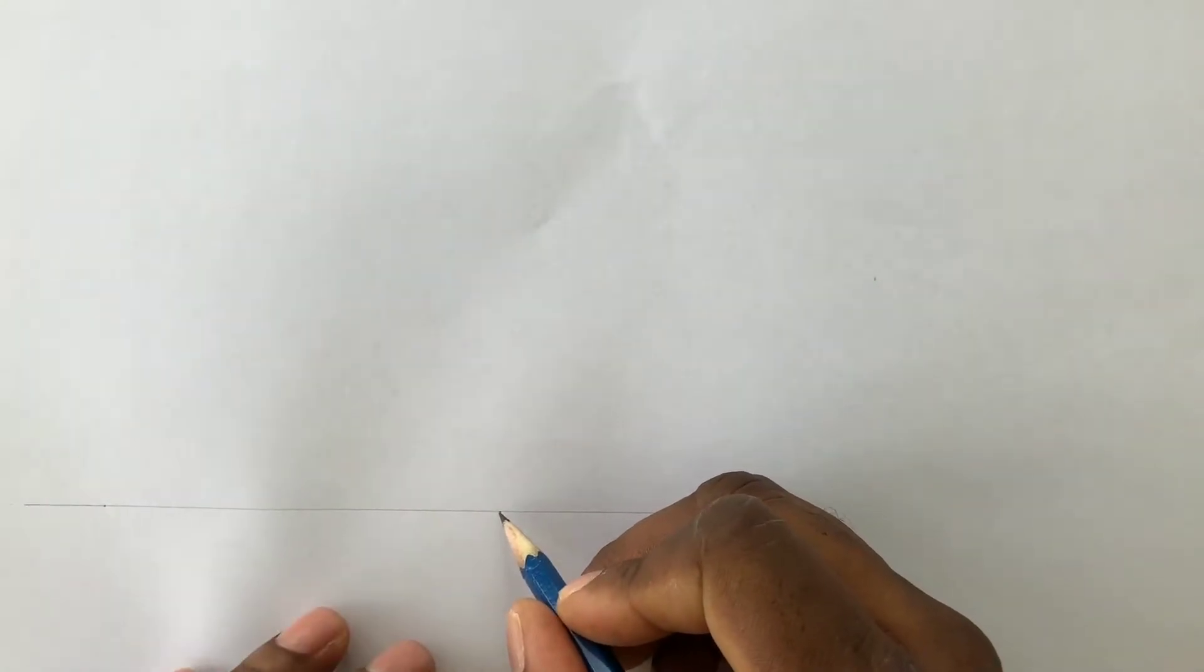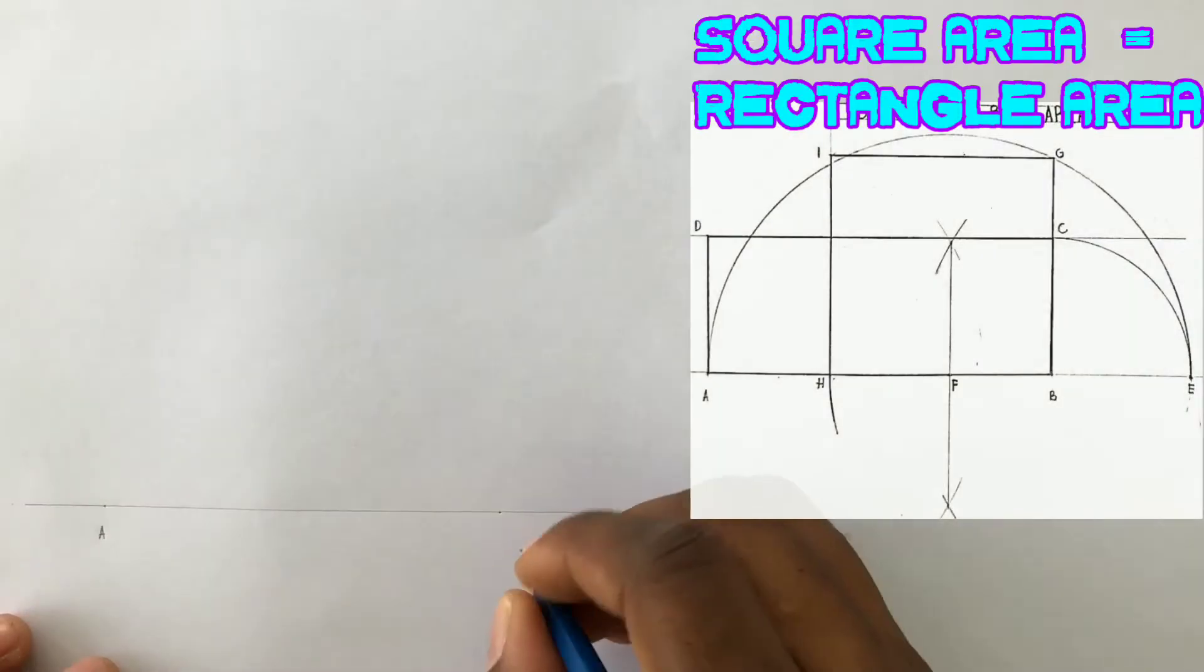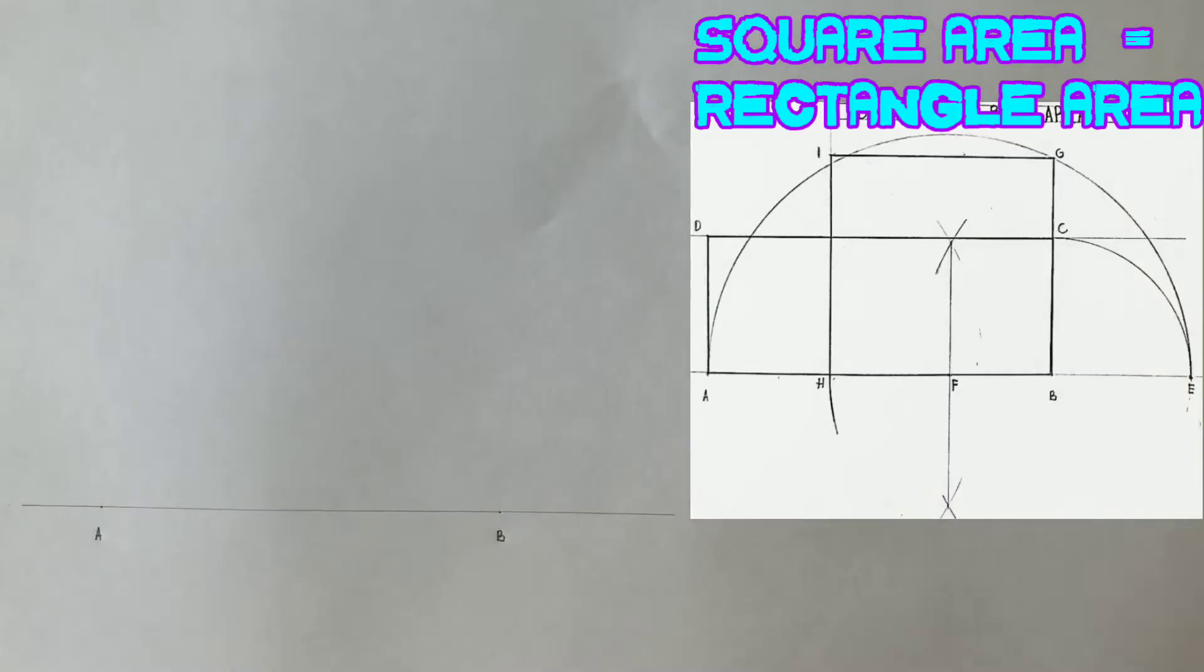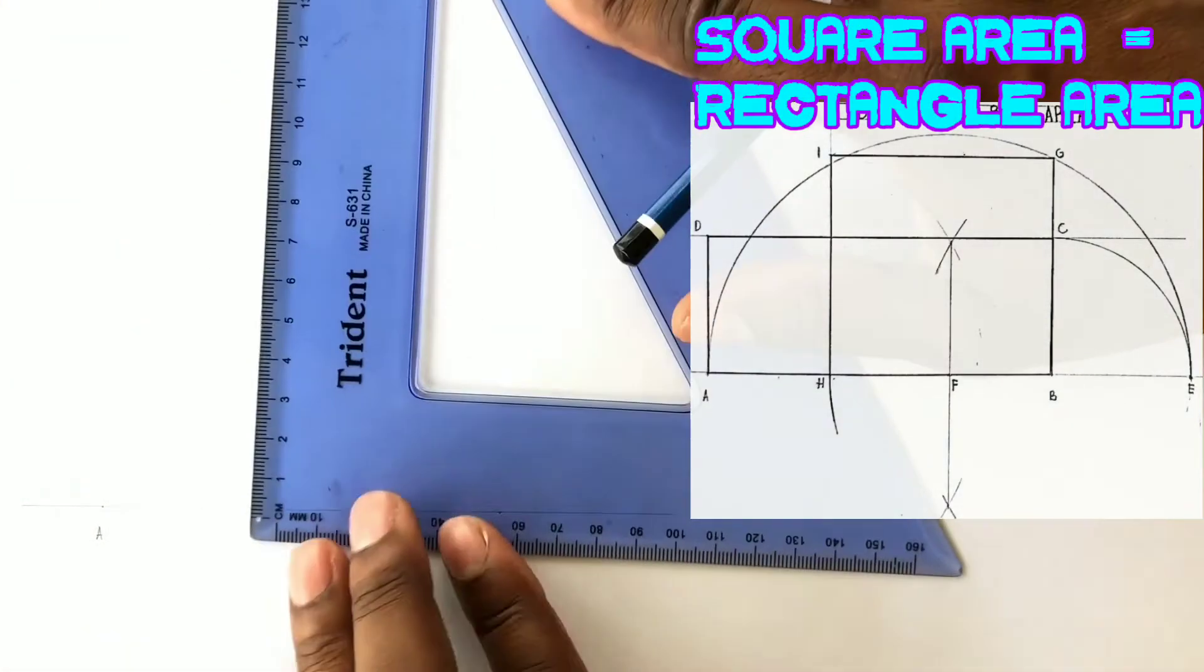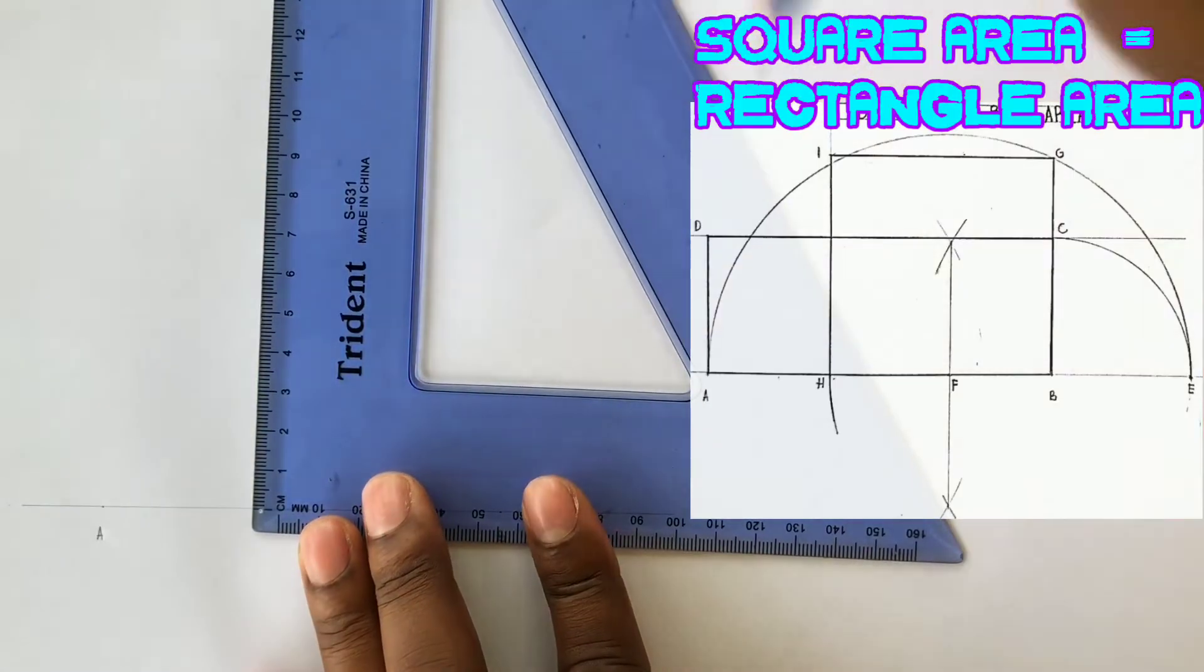Label point A and point B. Next you will identify a point above line AB, 40 millimeters away.